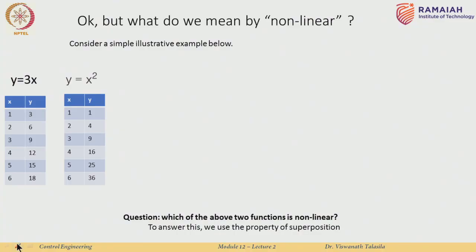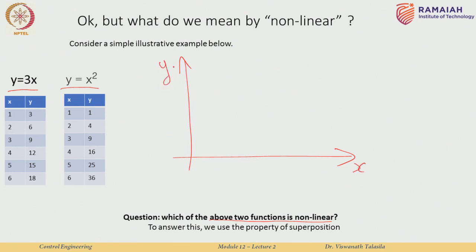Let us see a very simple illustrative example of linear and non-linear. We consider 2 functions: the first one is y = 3x, and the second one is y = x². The question I am posing is which of these 2 functions is non-linear. If I plot them with x on the horizontal axis and y on the vertical axis, y = 3x is a straight line through the origin, while y = x² is a parabola.